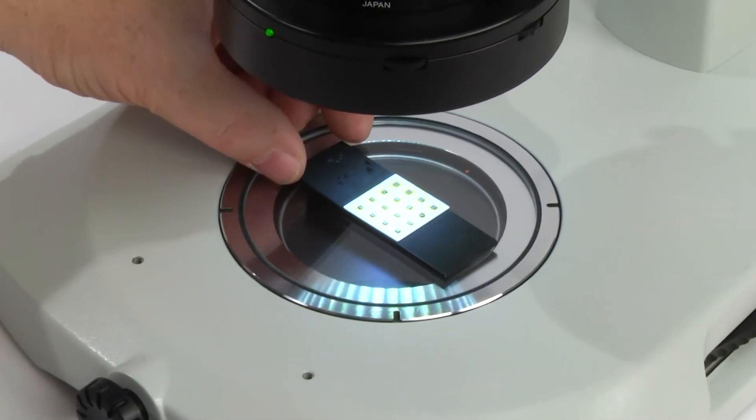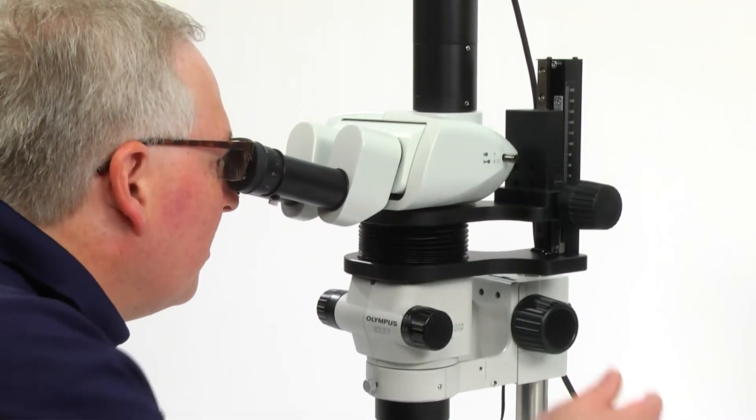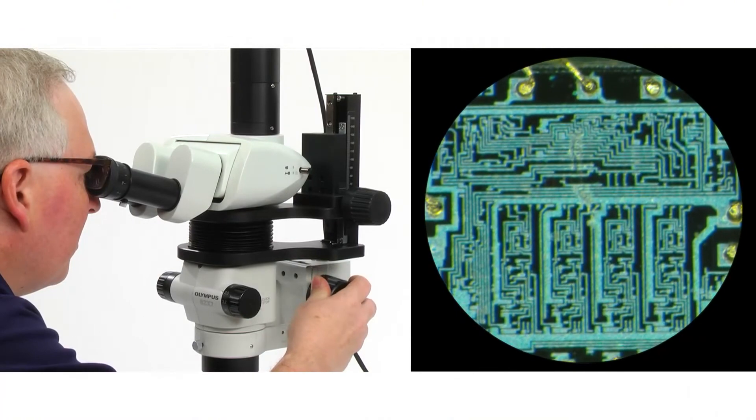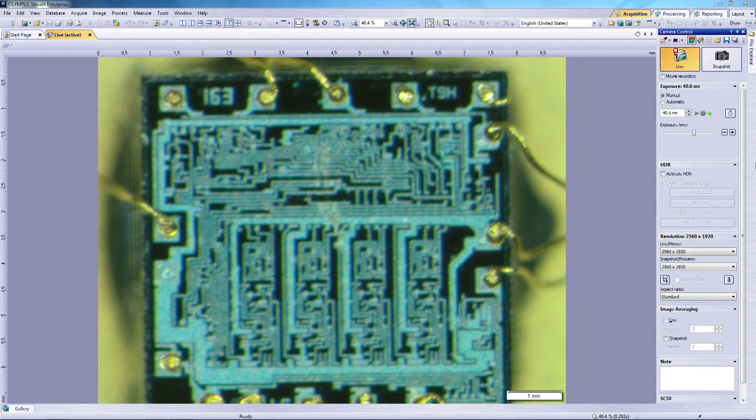First, place a sample on the stage plate. While looking through the eyepieces, bring the image into focus using the microscope focus knob. Display the image on the monitor. If the image on the monitor screen is blurry, a parfocality adjustment is required.